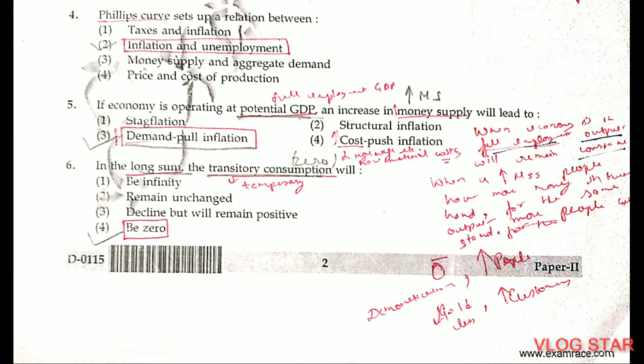Potential GDP is GDP at full employment. When the economy is at full employment, we cannot increase output further — output remains constant. In this situation, if we increase money supply, people have more income, so for the same output we have more demand. Demand-pull inflation happens due to increase in demand. Cost-push inflation happens due to increase in cost — for example, increase in the price of raw material or labor demanding higher wages.